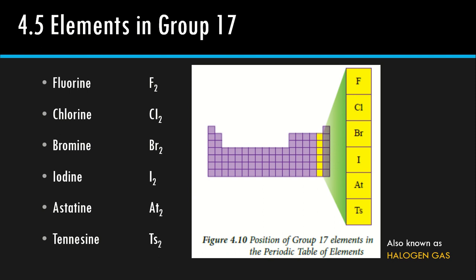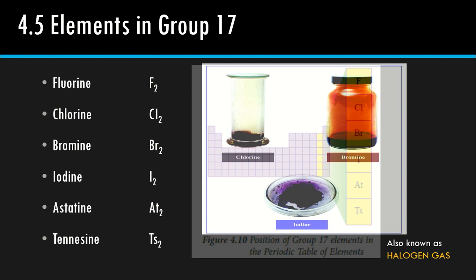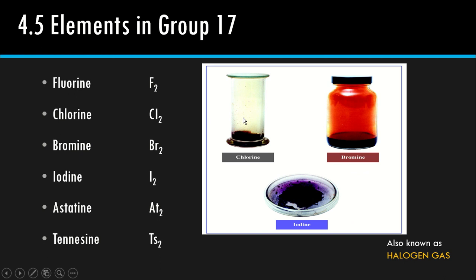This is an example of the element in Group 17. Chlorine, you can see, is a pale yellow color gas. Bromine is quite brownish. And iodine is purplish as solid.